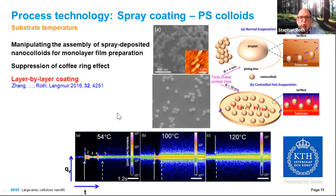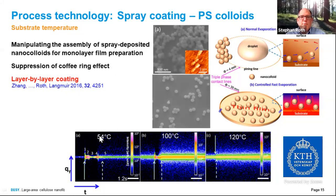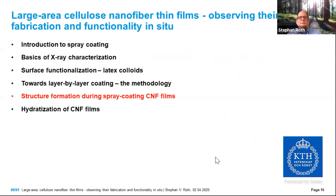Showing all the line cuts — intensity E(Qy) as a function of time for substrate temperatures of 54, 100, and 120 degrees centigrade — the solid arrow and dashed arrow mark the spray pulse of 0.1 seconds and the final dried state. With increasing substrate temperature, the time delay between the spray pulse landing and full drying becomes smaller and smaller, going down to around 50 milliseconds at 100 degrees centigrade. This is very important: at room temperature you have to wait very long, whereas at 120 degrees centigrade you have only 50 milliseconds drying time, enabling creation of very thick layers very quickly. We will make use of this in the structure formation during spray coating of CNF films.